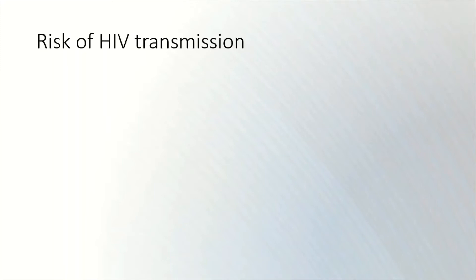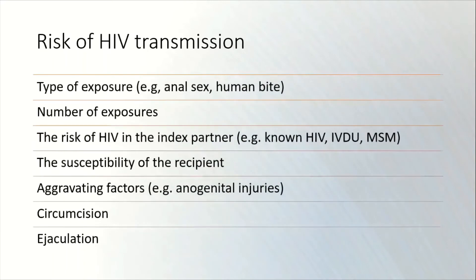Some of the things you may have put down include the type of exposure — for example, anal sex or a human bite. The risk of transmission of HIV during anal sex is greater than during vaginal sex, which is greater than during oral sex. So the type of exposure is important to know.